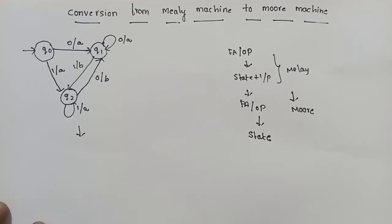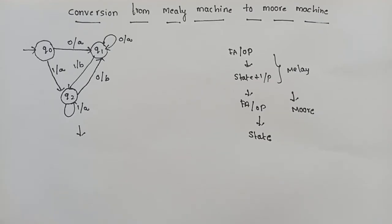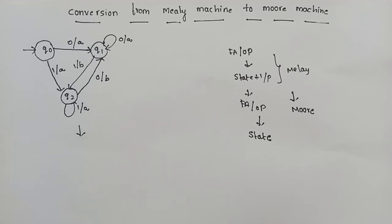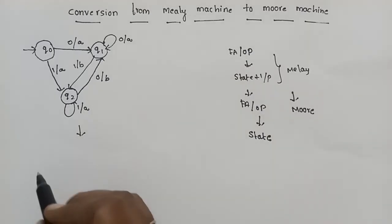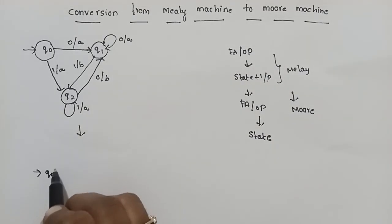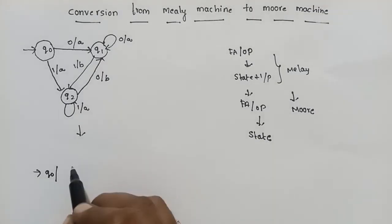So if we add extra states, we will match the number of states in the Mealy Machine and the number of states in the Moore Machine.